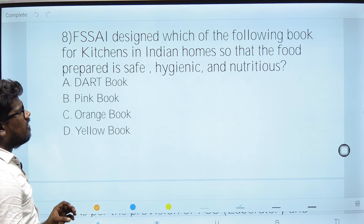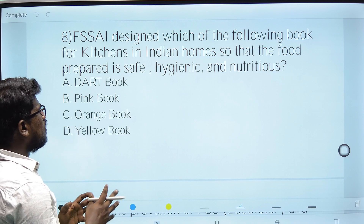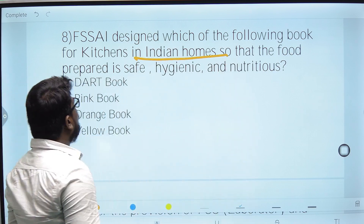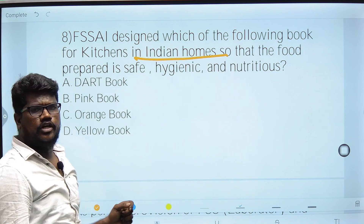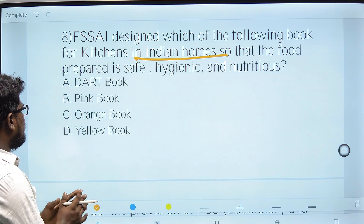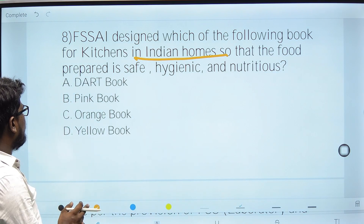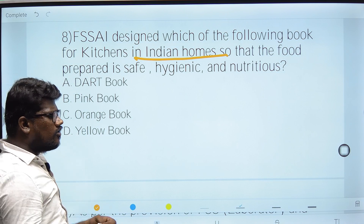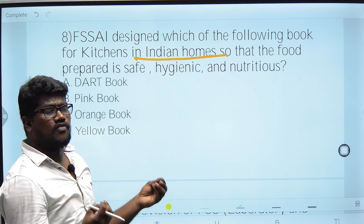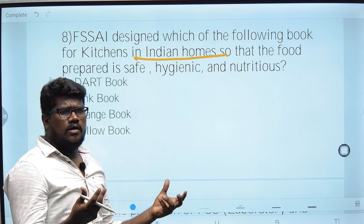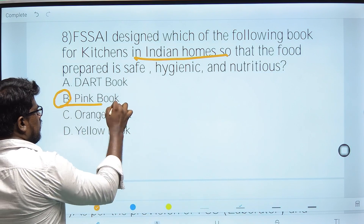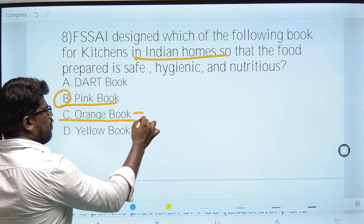Eighth question: FSSAI designed which book for kitchens in Indian homes so that food prepared is safe, hygienic, and nutritious? The answer is the DART book — Detect Adulteration with Rapid Test — which provides simple tests for detecting adulterants. It is also called the Pink Book, and that is the right answer.